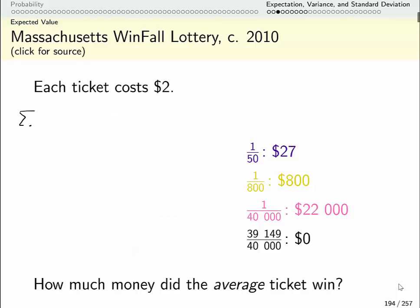So I'm going to take the sum over all possible values. Here my variable is how much money the ticket wins and I multiply the value times the probability of actually winning that much money. So one value is $27 and the probability of winning $27 is 1 in 50, so if we were to buy a million tickets I would be pretty certain that 1 in 50 of them, a 50th of them or 2% of them would win me $27.